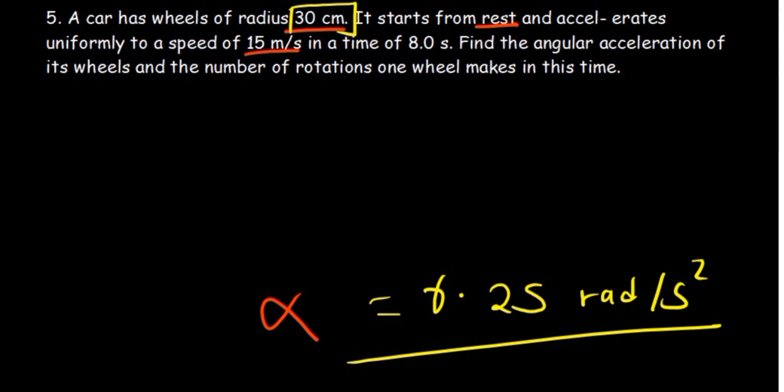We know that theta is equal to - so this is s equals ut plus one-half at squared. I've just converted directly to circular. Rotations are referring to angular displacement.